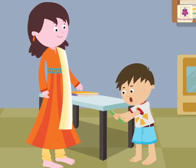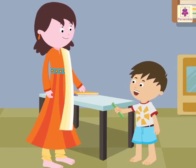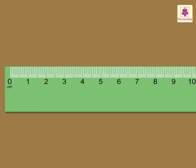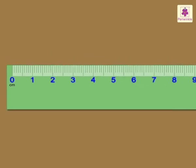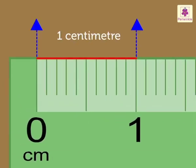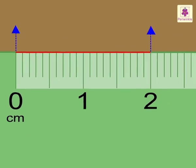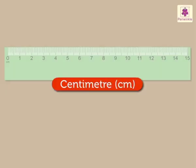So these show the centimetres. But how do we measure the length with this? Come, let me explain. We measure the length from the zero mark by counting numbers from 0 to 15. We read the length as 1 centimetre, 2 centimetres, 3 centimetres and so on. To write centimetre, we use its short form, that is CM.